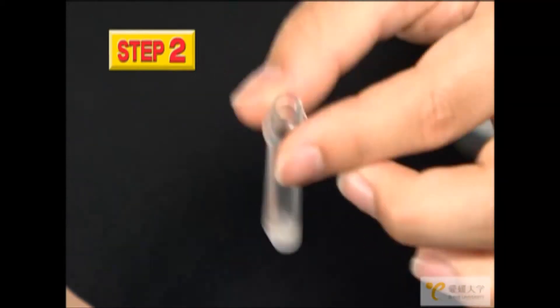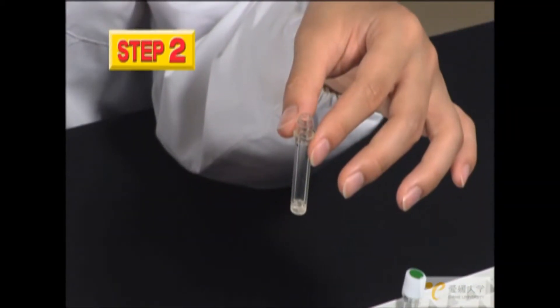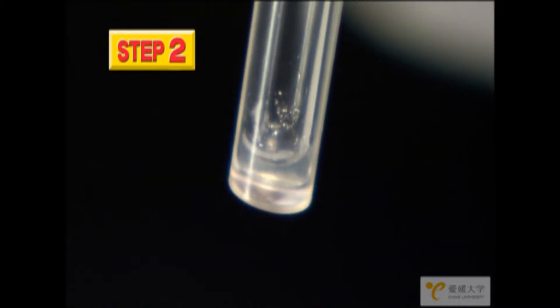Shake the tube gently until the powder is dissolved as a cloudy white mixture. This solution can be used to make protein.